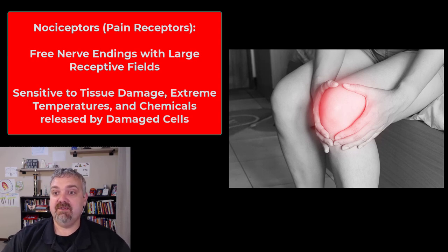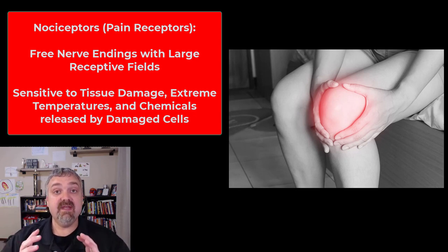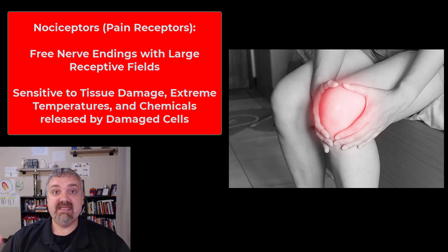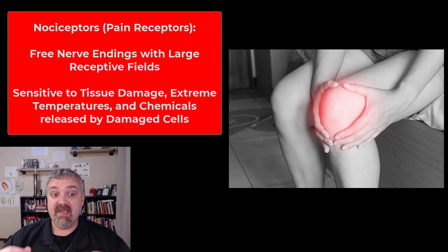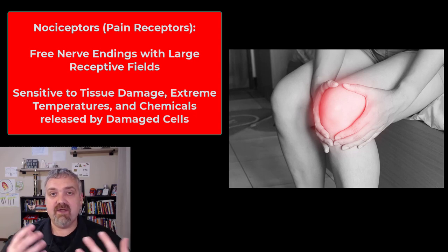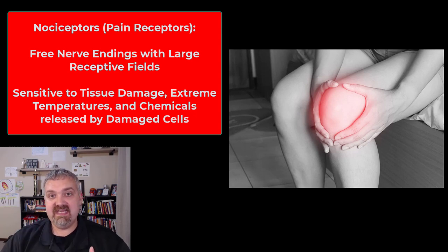Nociceptors are your pain receptors. You find a lot of them in your skin, around joint capsules, around the periosteum (the skin around your bones), and around the walls of blood vessels. Pain receptors are free nerve endings triggered by tissue damage — whether chemical, from extremes of temperature, or mechanical. That's why pain is hard to classify: whether you've been burned by acid, burned by heat, or have a deep cut, you might feel burning pain because of this overlap.